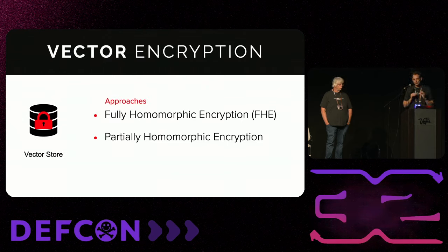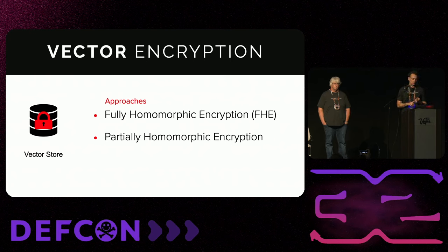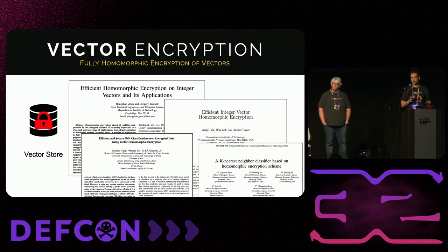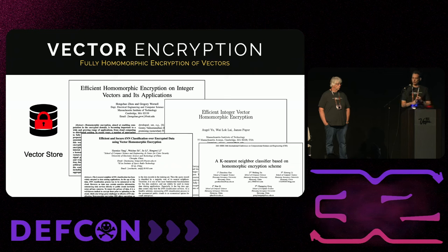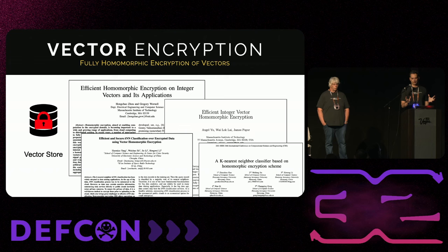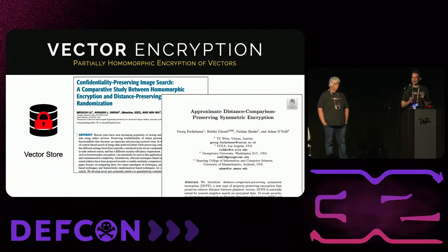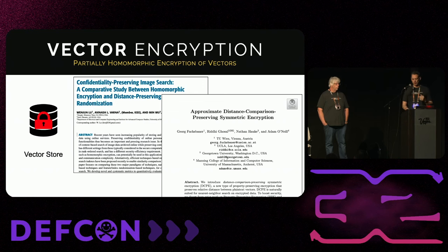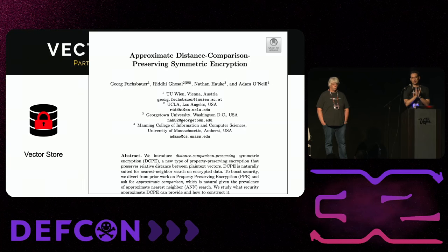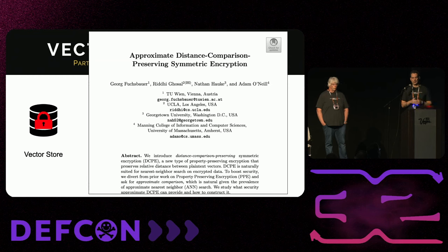The way to protect vectors is to encrypt them. There are two approaches from academia: fully homomorphic encryption and partially homomorphic encryption. Fully homomorphic encryption has many papers and approaches, but typically suffers from being slow and would require building your own vector database. The other option — partially homomorphic encryption — is able to do some but not arbitrary operations. In this case, we're optimizing for that nearest neighbor search type of operation. I'll turn it over to Bob to talk more about this.